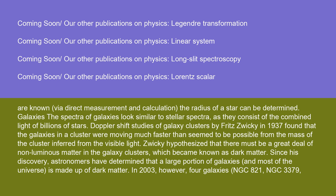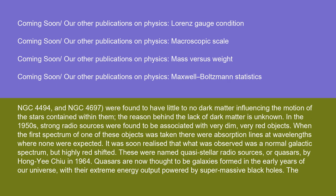Galaxies: the spectra of galaxies look similar to stellar spectra as they consist of the combined light of billions of stars. Doppler shift studies of galaxy clusters by Fritz Zwicky in 1937 found that the galaxies in a cluster were moving much faster than seemed to be possible from the mass of the cluster inferred from the visible light. Zwicky hypothesized that there must be a great deal of non-luminous matter in the galaxy clusters, which became known as dark matter. Since his discovery, astronomers have determined that a large portion of galaxies and most of the universe is made up of dark matter. However, in 2003, galaxies NGC 821, NGC 3379, NGC 4494, and NGC 4697 were found to have little to no dark matter influencing the motion of the stars contained within them, and the reason behind the lack of dark matter is unknown.